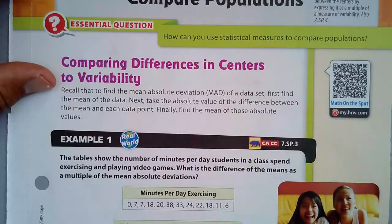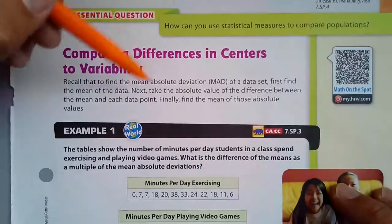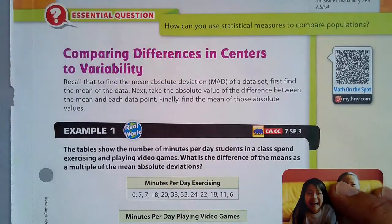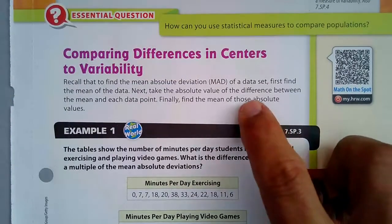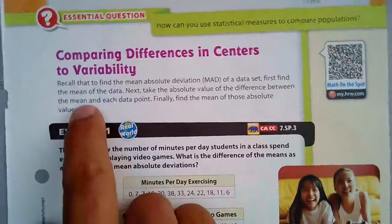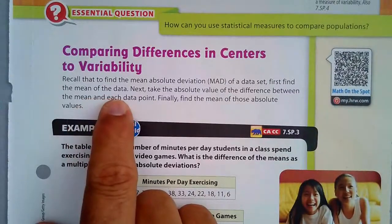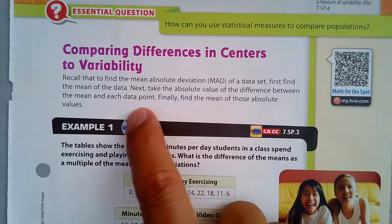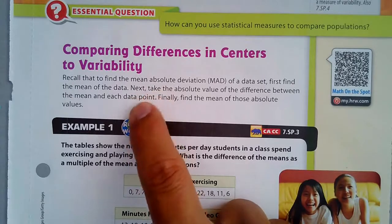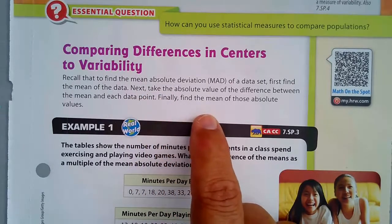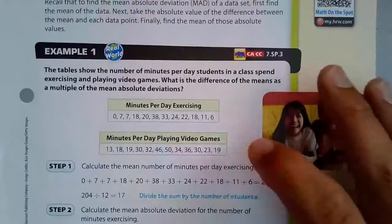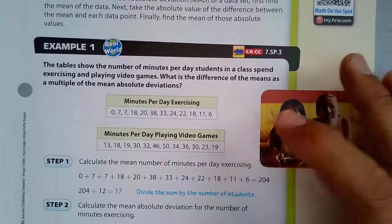We'll compare differences in centers and variability. Recall that the mean absolute deviation, or MAD, of a data set: first, find the mean of the data, then take the absolute value of the differences between the mean and each data point. Finally, take the mean of those absolute values. I'm going to review that process — it's a pretty long process.